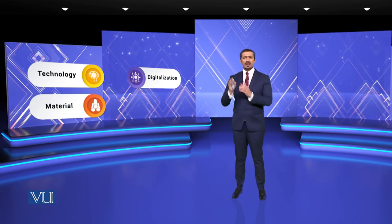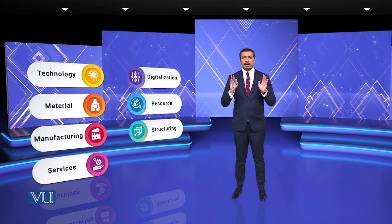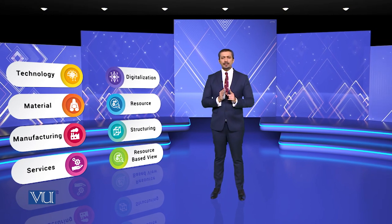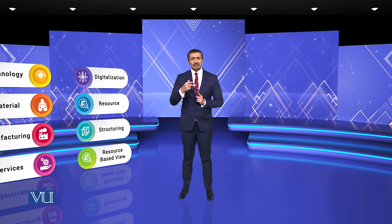Ladies and gentlemen, understand this very carefully. According to the Industrial Organization view, the most important part is the resource-based view — whether it is technology, digitization, material resources, manufacturing, structuring, or services. The most important thing is the resource-based view. I showed you the model: internal and external factors, their mandates, policies and procedures, and strategic tools and techniques.